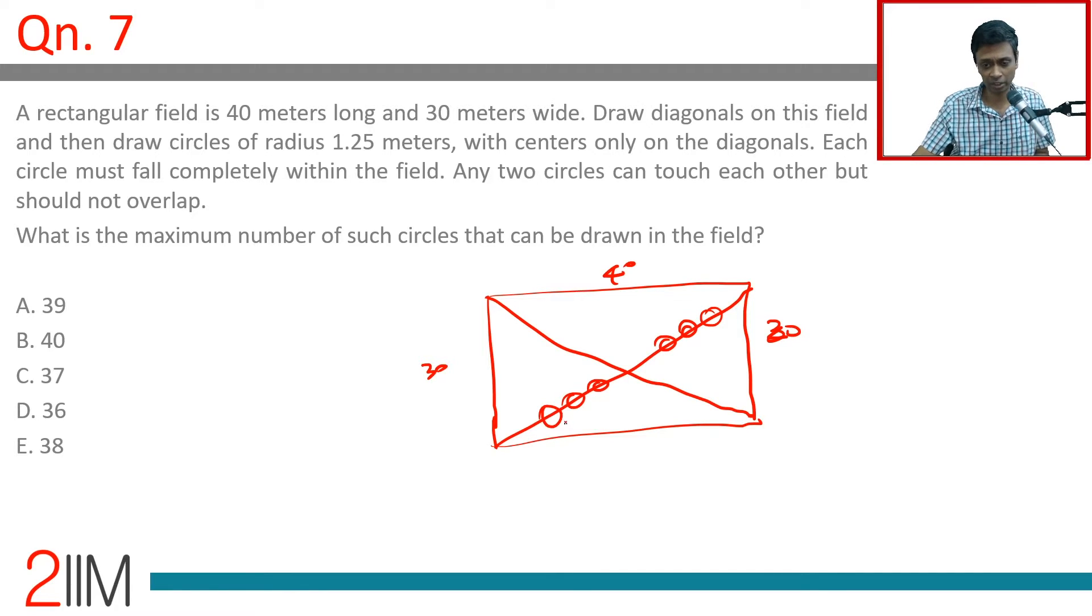Brilliant, this is classic XAT. First of all, this is 50, this is also 50. If radius is 1.25 meters, diameter is 2.5 meters.